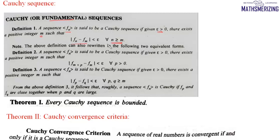We can write this definition in two equivalent forms. The first form: for any epsilon greater than zero, there exists a positive integer m such that |f(m+p) minus fm| is less than epsilon for all p greater than zero. Or equivalently, a sequence {fn} is a Cauchy sequence if for any epsilon greater than zero, there exists a positive integer m such that |fp minus fq| is less than epsilon for all p, q greater than or equal to m.